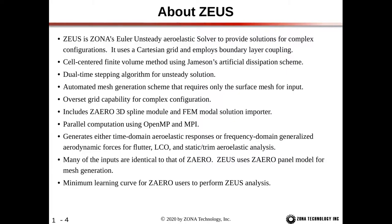Zeus uses an overset grid capability for complex configurations. For example, with stores under a wing, the store and the wing cannot be in the same global block of mesh for the automated mesh generation scheme. With the overset mesh, the stores are in one block of mesh, the wing is in another, and the overset scheme is used to retain the automated mesh generation.